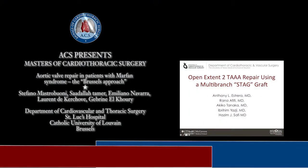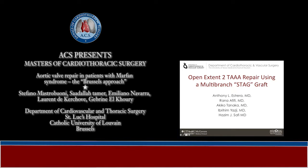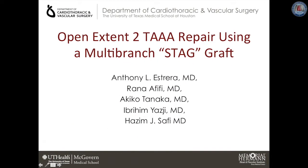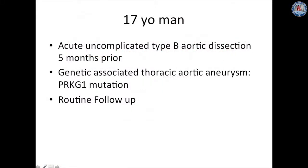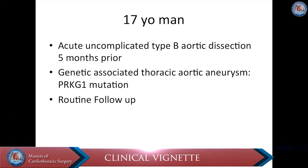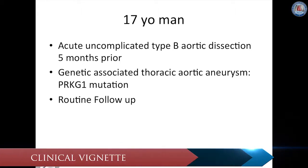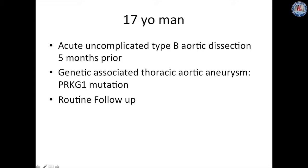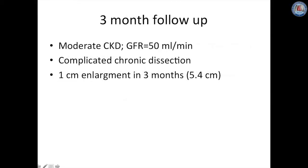This video demonstrates open repair of an extent 2 thoracoabdominal aortic aneurysm utilizing a multi-branch staged graft. The patient is a 17-year-old young man who suffered acute type B uncomplicated aortic dissection 5 months prior. He has a genetically associated thoracic aortic aneurysm confirmed by PRKG1 mutation, and on routine follow-up was found to have a complicated chronic aortic dissection with enlargement of the aorta within 3 months.